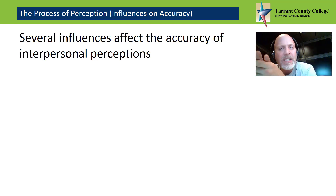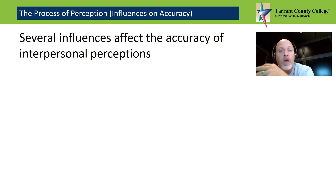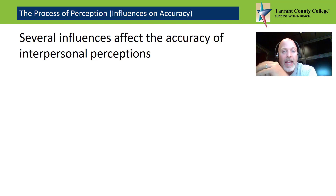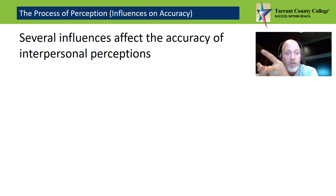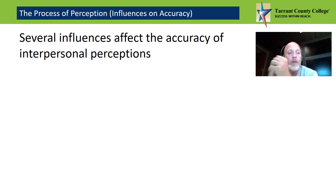Now, because we constantly make perceptions, you might think we're all but experts at it by now. But the truth is, perceptual mistakes are often easy to make. There are three factors in particular that influence the accuracy of our perceptions and lead to errors: our physiology, our culture and co-cultural backgrounds, and our social norms. This is a way to re-evaluate what we think we know about stereotypes.